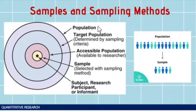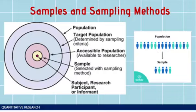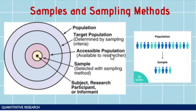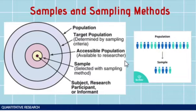For example, your population could be senior high school students. The target population, determined by sampling criteria, could be Grade 12 STEM students. You also have the accessible population, which refers to those who are available to the researcher. This is especially relevant in the new normal, where we cannot conduct studies face-to-face and must maximize the use of online surveys.